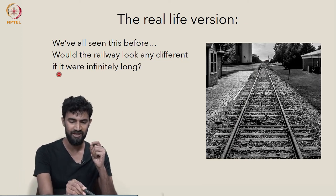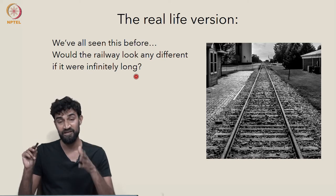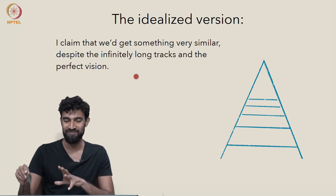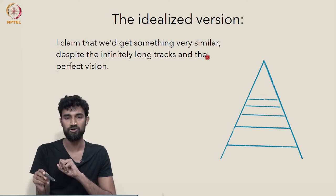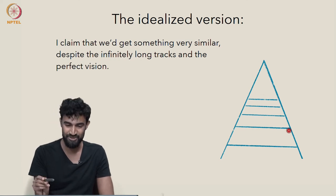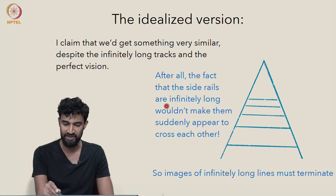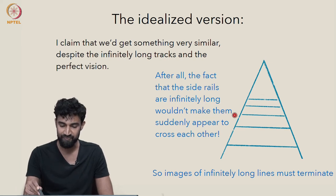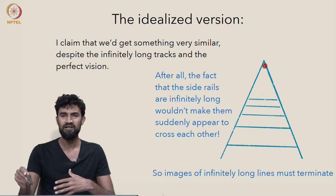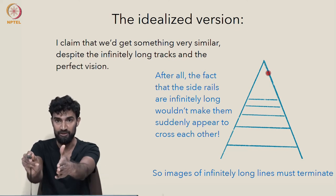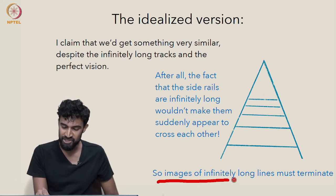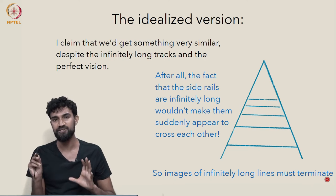But would the railway look any different if the tracks were infinitely long? So in this idealized version, I actually claim that we'd get something very similar. Despite the infinitely long tracks and the perfect vision, we'd pretty much see the same thing. And I'll try to convince you of this. After all, the fact that the side rails are now infinitely long wouldn't make them suddenly appear to cross each other. Already they seem to converge at this point. If we made them longer in real life, they're still parallel in real life. They won't suddenly appear to cross each other in the picture plane. So the images of infinitely long lines must terminate.